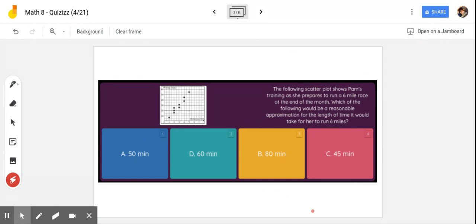The last question on this subject says the following scatter plot shows Pam's training as she prepares to run a six mile race at the end of the month. Which of the following would be a reasonable approximation for the length of time it would take for her to run six miles? Looking at this chart, here is the number of miles. If we take this chart, there's six miles and we kind of go up there, and I come back across. How long is it going to take her? Probably somewhere in the neighborhood of there, right? So which one of these makes sense? Look at your table or your coordinate plane and look at the intervals of that. Can she run it in a shorter amount of time than she ran in five hours? You can eliminate a couple of these. Just look at those and see what you got.